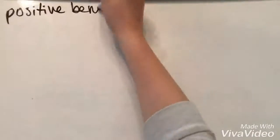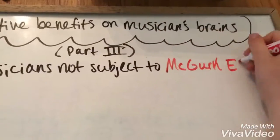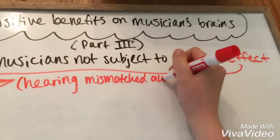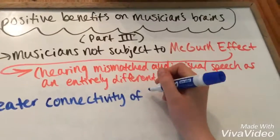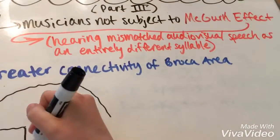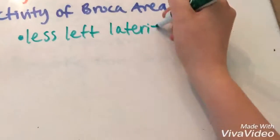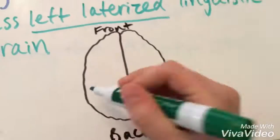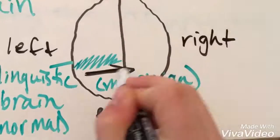Another way that music benefits musicians' brains is that musicians are not subject to the McGurk effect, which is hearing mismatched audiovisual speech as an entirely different syllable. This is because musicians have greater connectivity of the left Broca area of the brain, which is used for speech processing. They also have a less left-lateralized linguistic brain. This leads to greater function of the right linguistic brain.